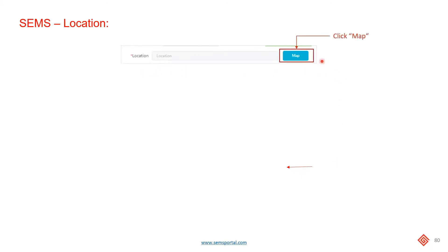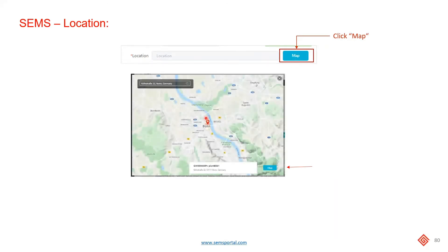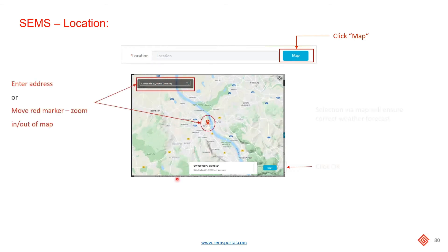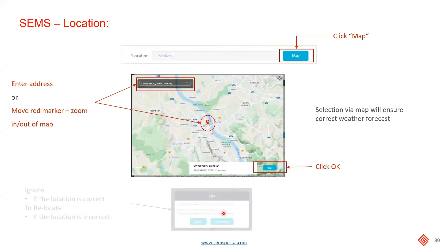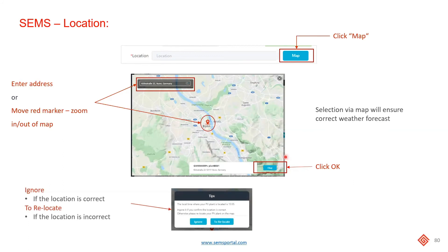In terms of the location, you can click on the map button here, which will bring up a Google Maps screen allowing you to drag and drop or enter the address of the end user and select the location. Once it's correct, press OK and confirm. This is important because on our SEMS overview we have a five-day weather forecast, so if you select the wrong region it will show the incorrect weather forecast for that particular system.